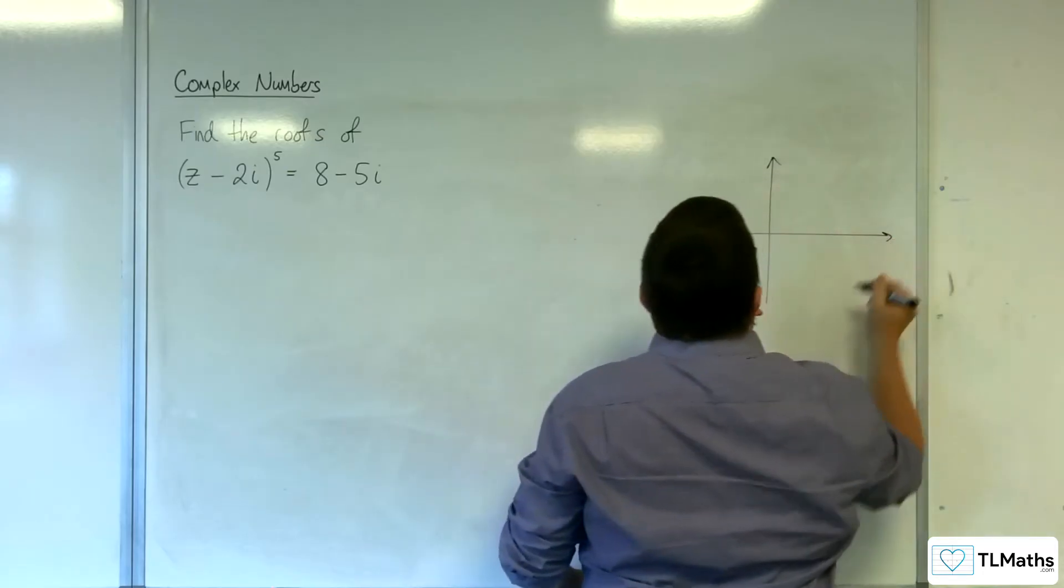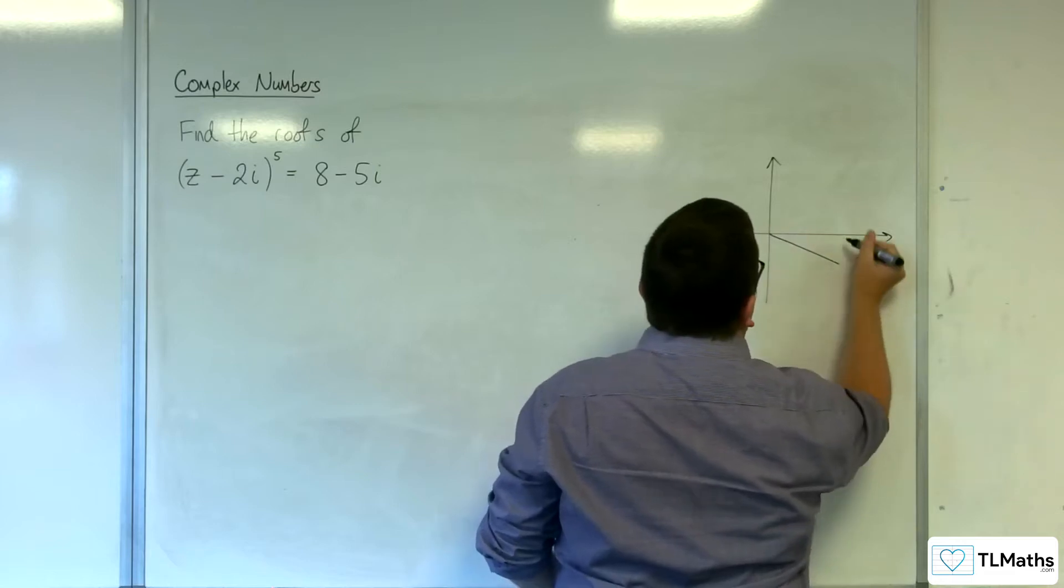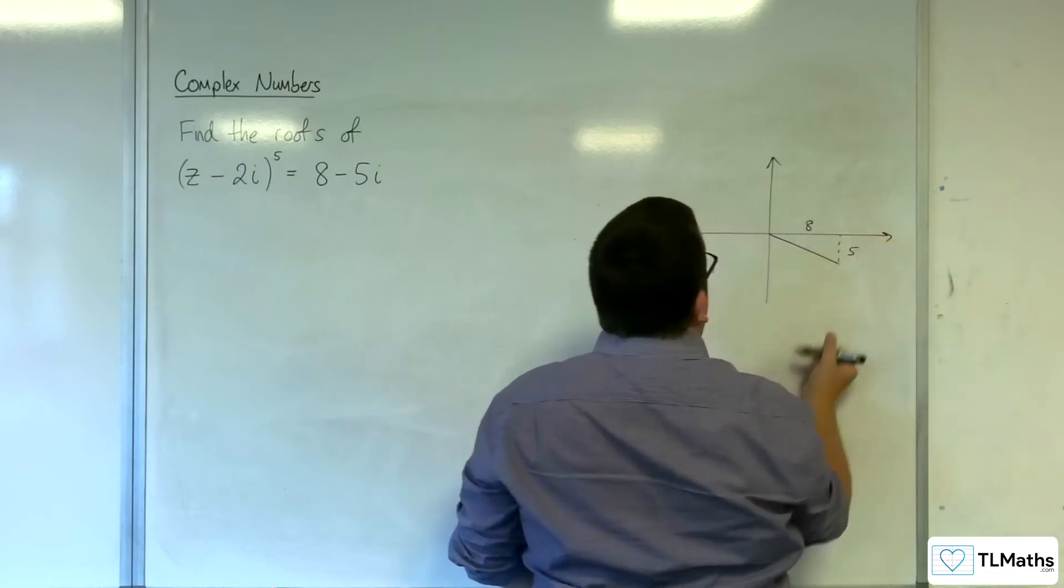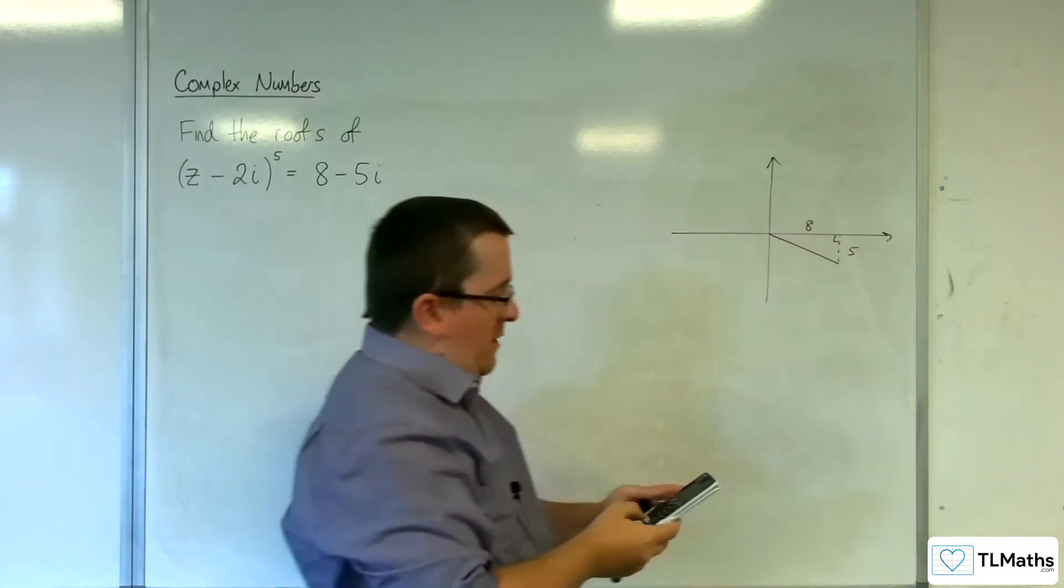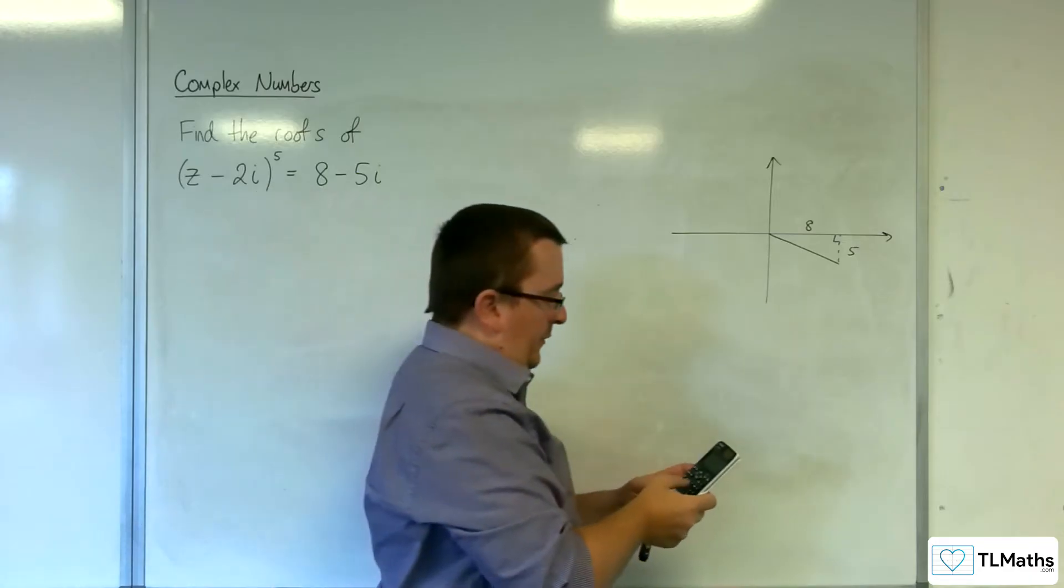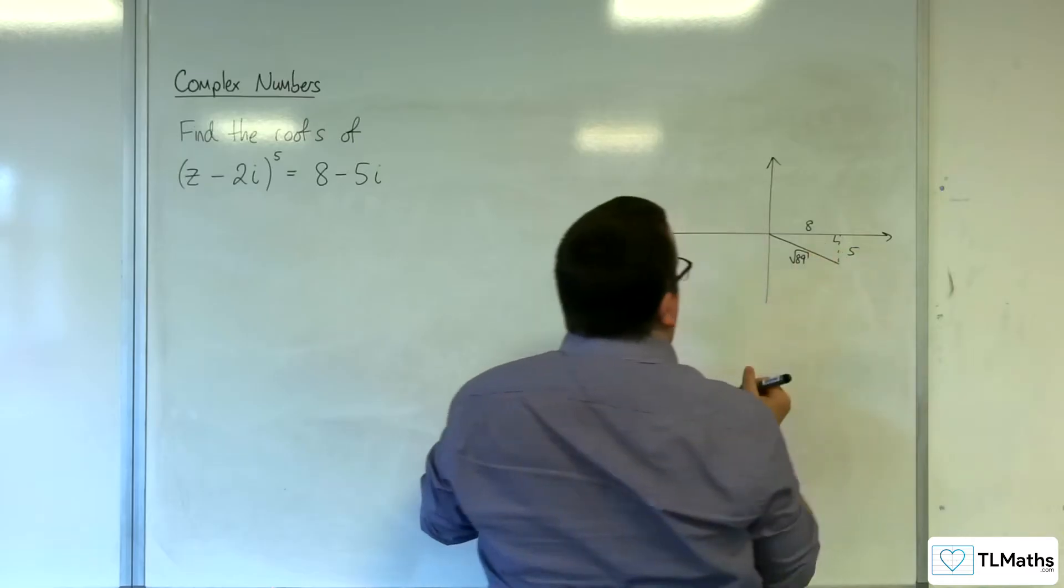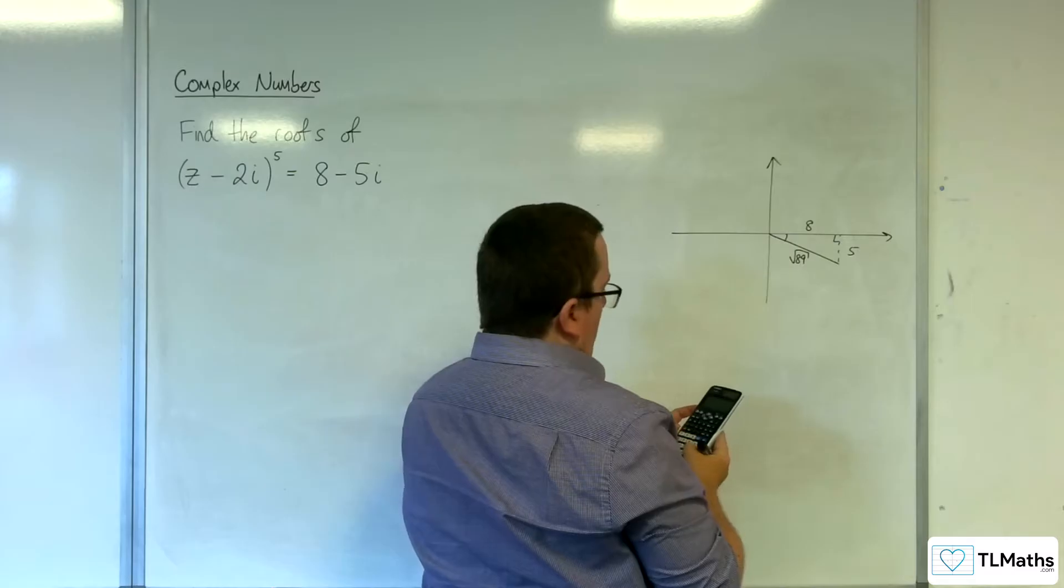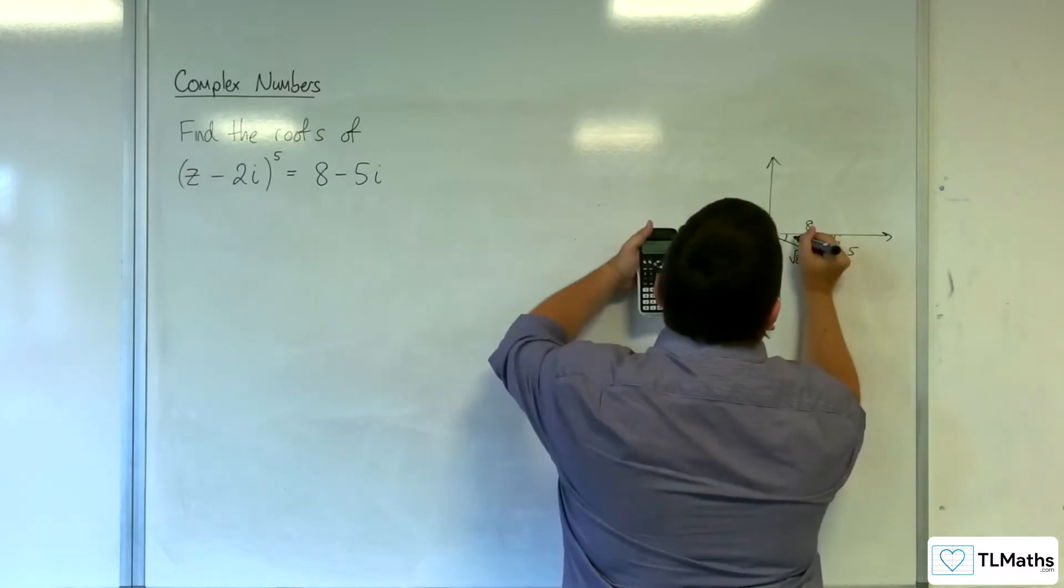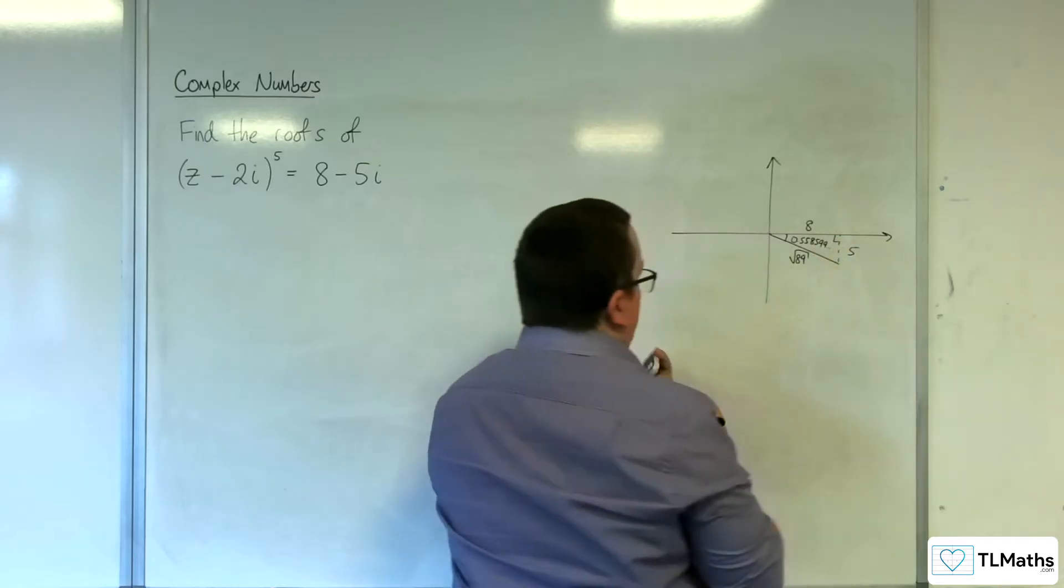Now, 8 take away 5i, so somewhere down here. So 8 long, 5 down. Square root of 8 squared plus 5 squared is root 89. So that's the modulus. The argument, inverse tan of 5 over 8. So 0.558599, etc.